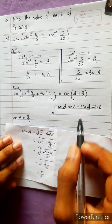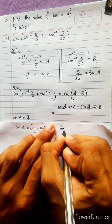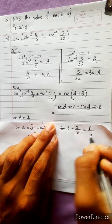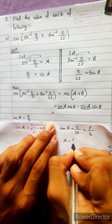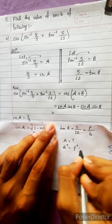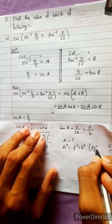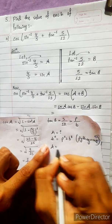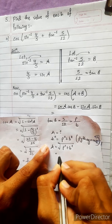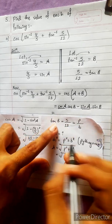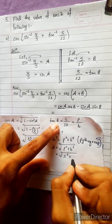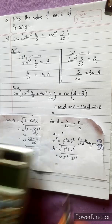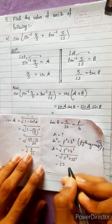Now we need to find sin B and cos B. Since tan B = 5/12, and tan B = perpendicular/base, we use the Pythagoras theorem: H = √(P² + B²). With P = 5 and B = 12, H = √(25 + 144) = 13. So the hypotenuse is 13.